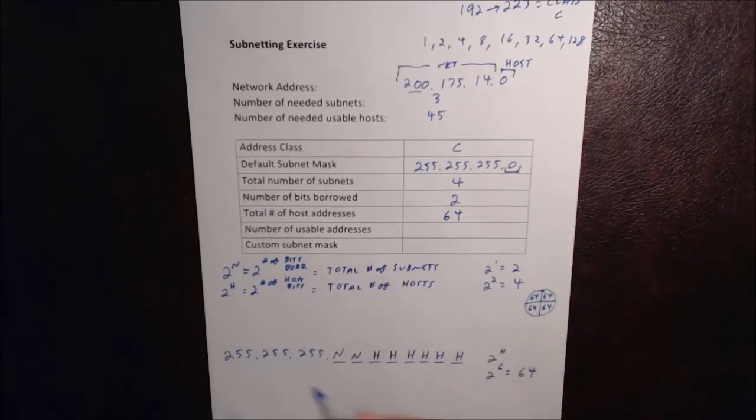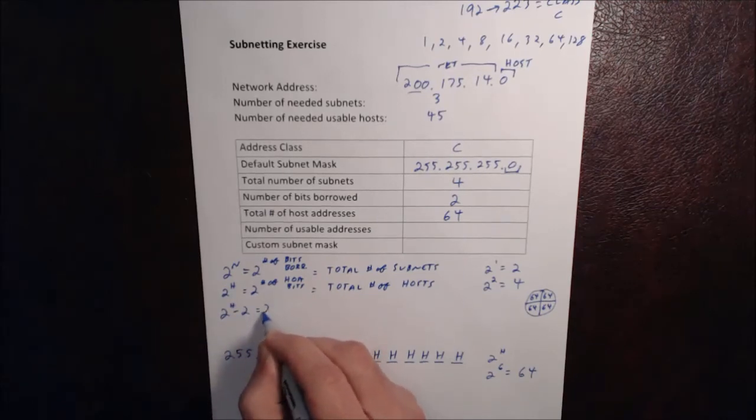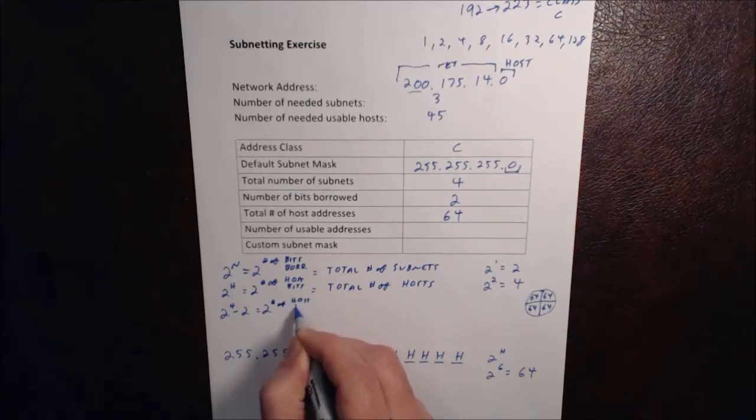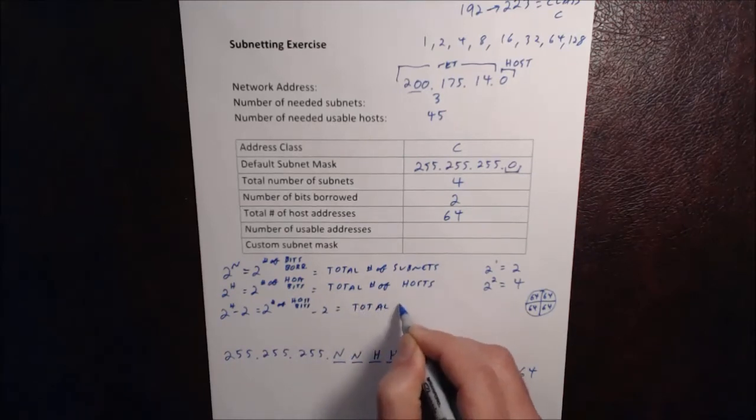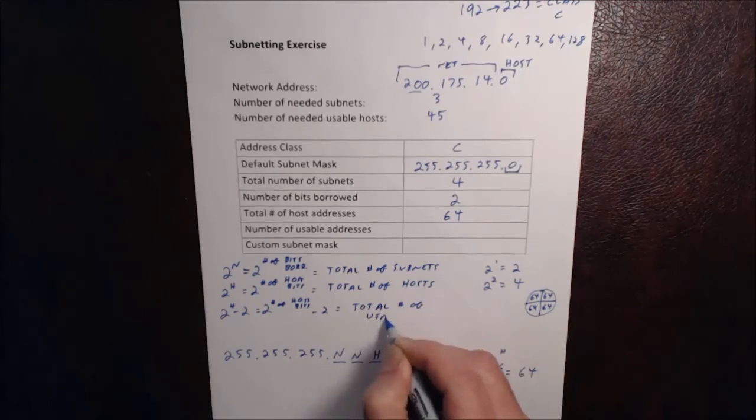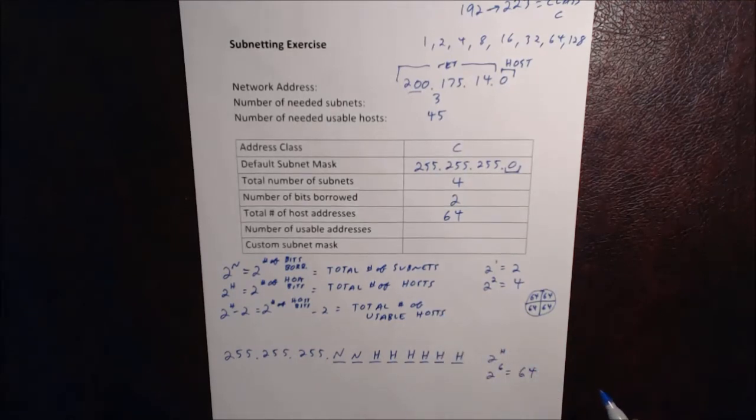The number of usable addresses is based on that formula as well, and it's just 2 to the h minus 2, and so that's 2 to the number of host bits minus 2, and that gives us the total number of usable hosts. So you're probably wondering why do we subtract 2. Well, the reason is, so let me finish the formula here. So we've got, that's the number of hosts, of possible hosts, and then 2 to the 6 minus 2 equals 64 minus 2, which equals 62, and that's our number of usable addresses.